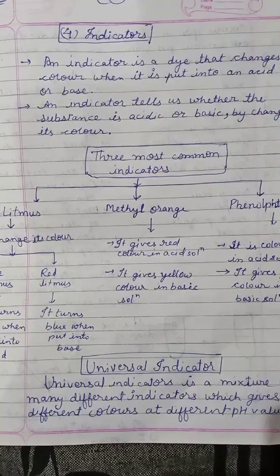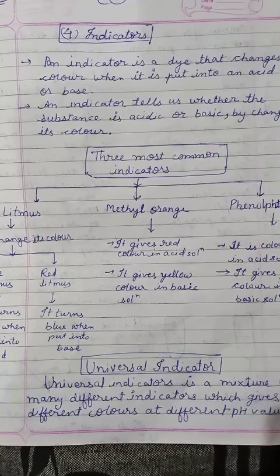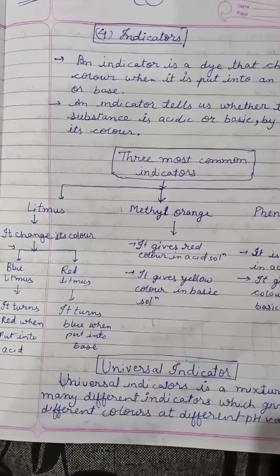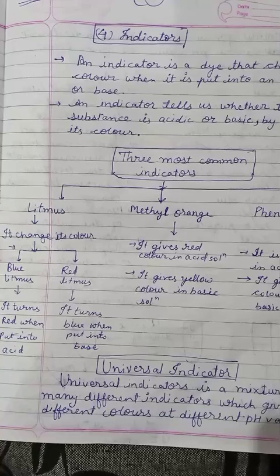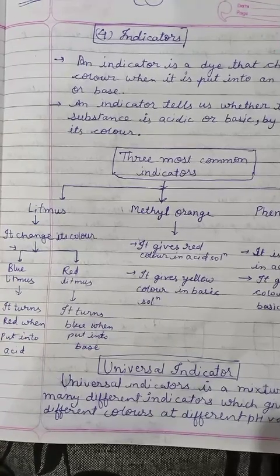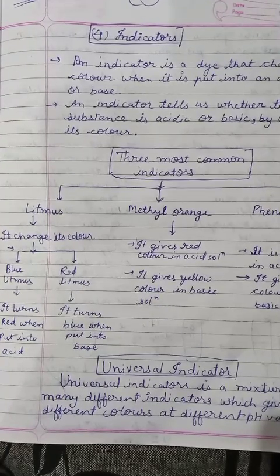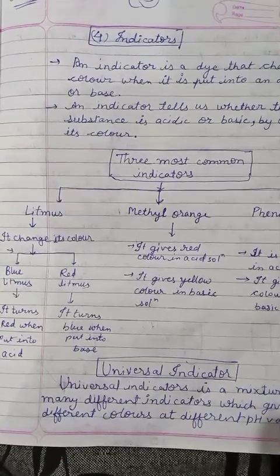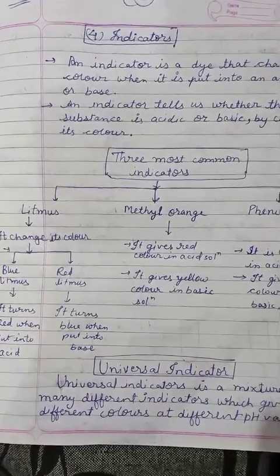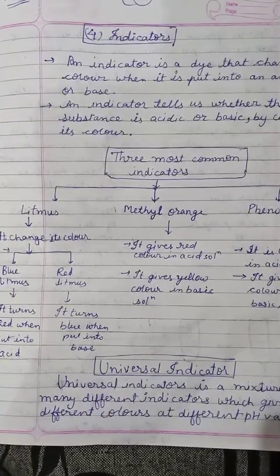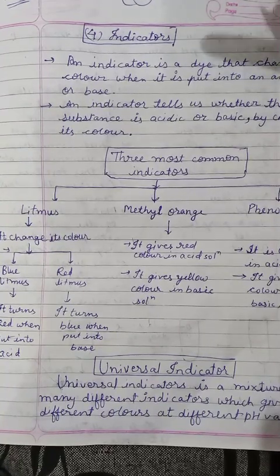There are three most common indicators: first is litmus, second is methyl orange, and third is phenolphthalein. We studied about litmus in our earlier class. There are two types: blue litmus and red litmus paper. Blue litmus paper turns red when put into acid, and red litmus paper turns blue when put into base.